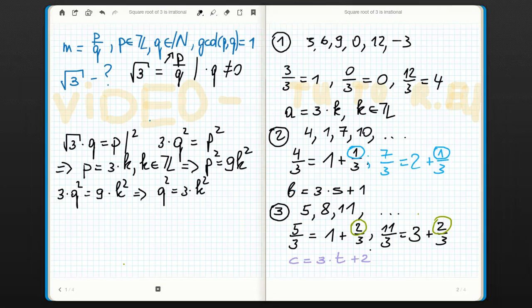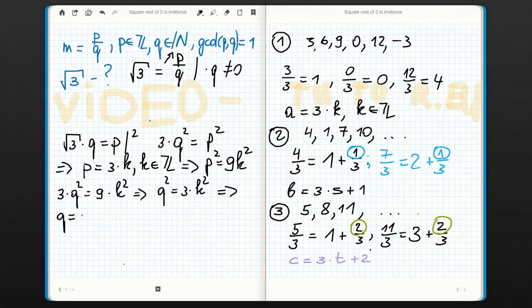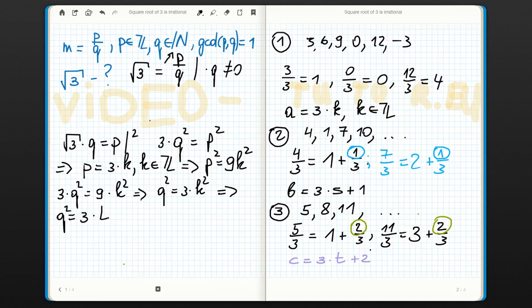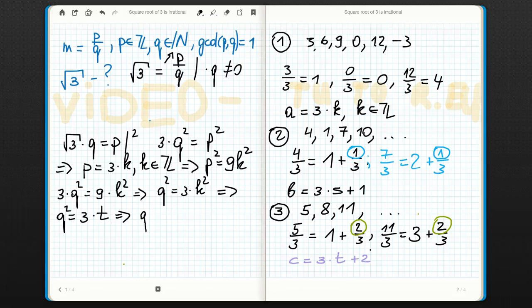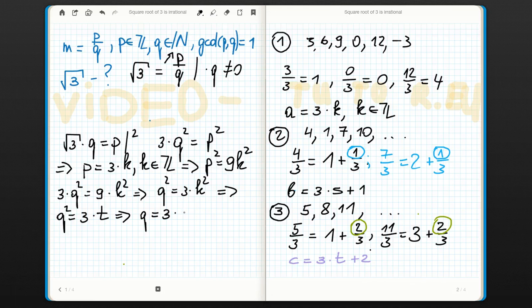Which means that q squared is 3 times something, so q itself is a multiple of 3. By the same argument, q must be 3 times some f.